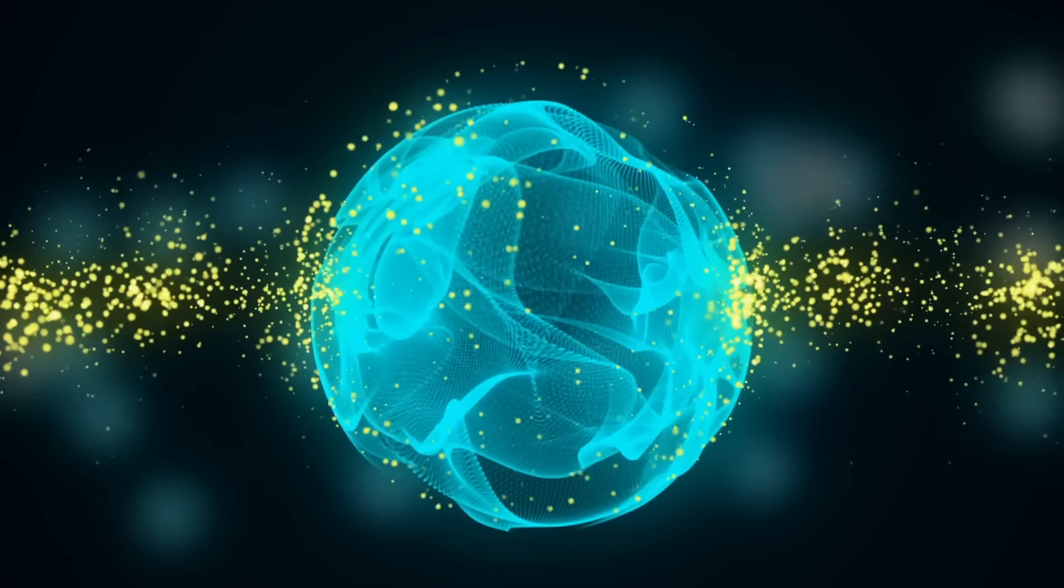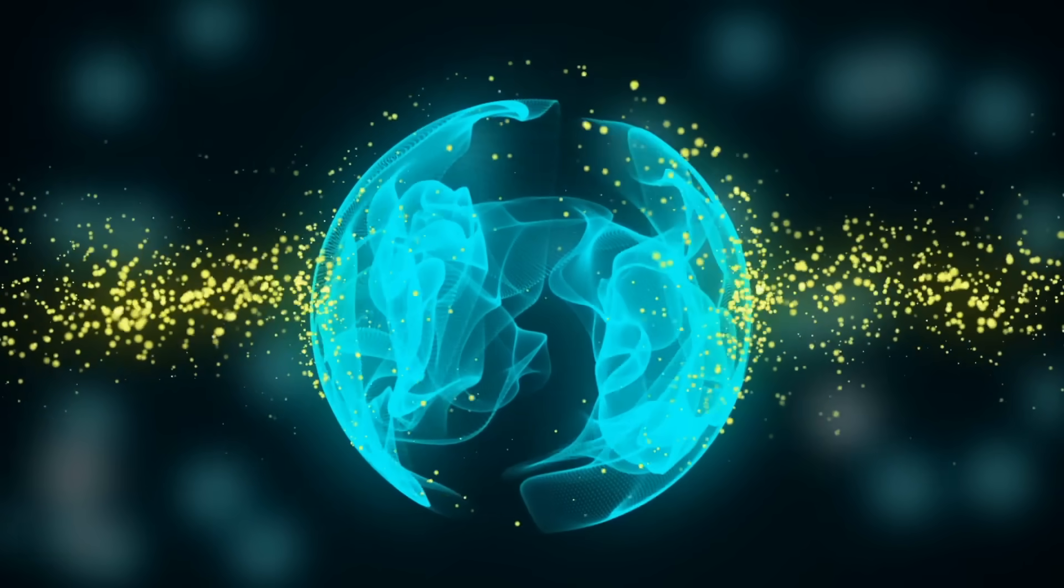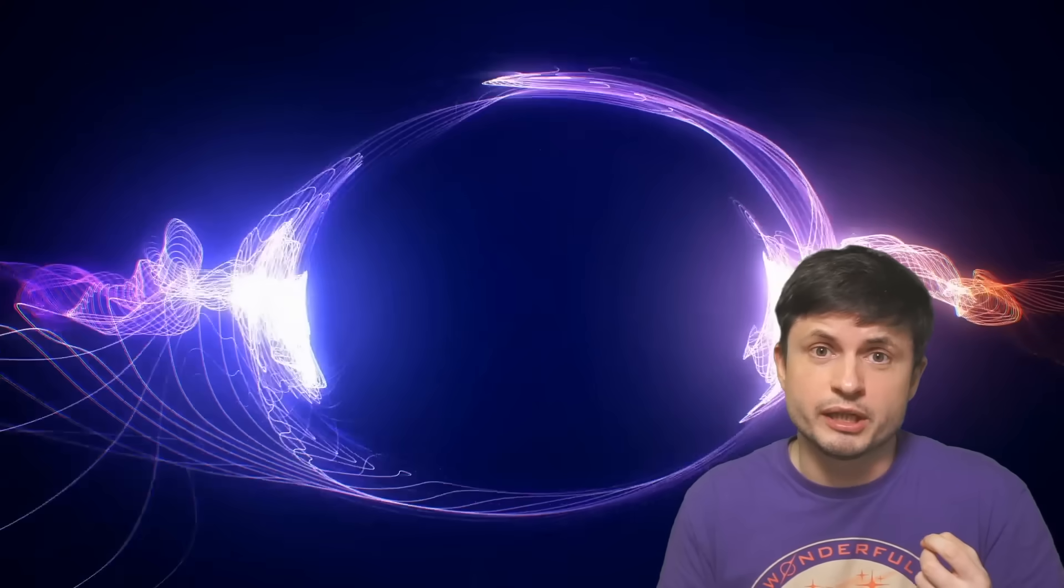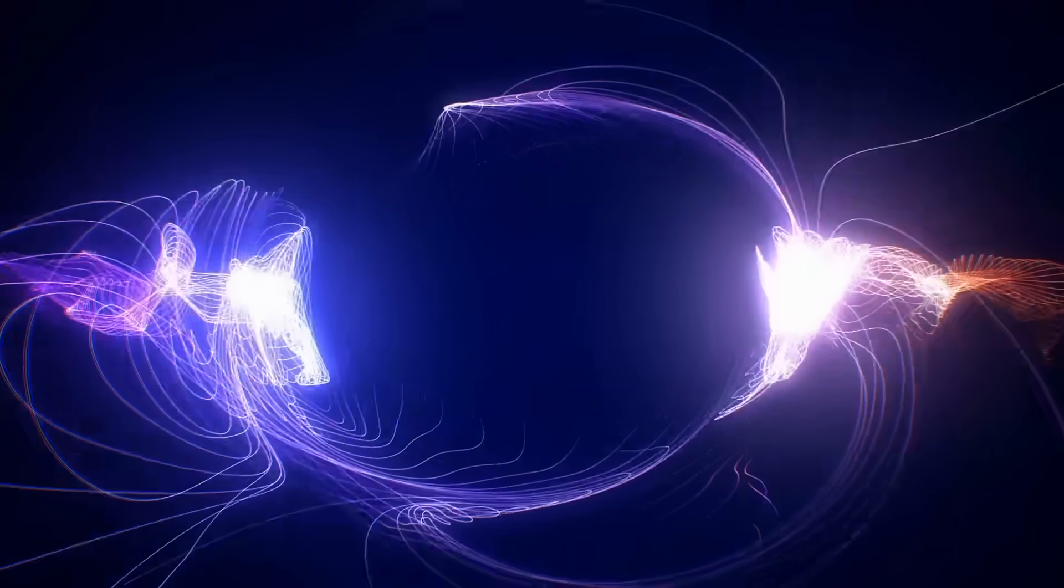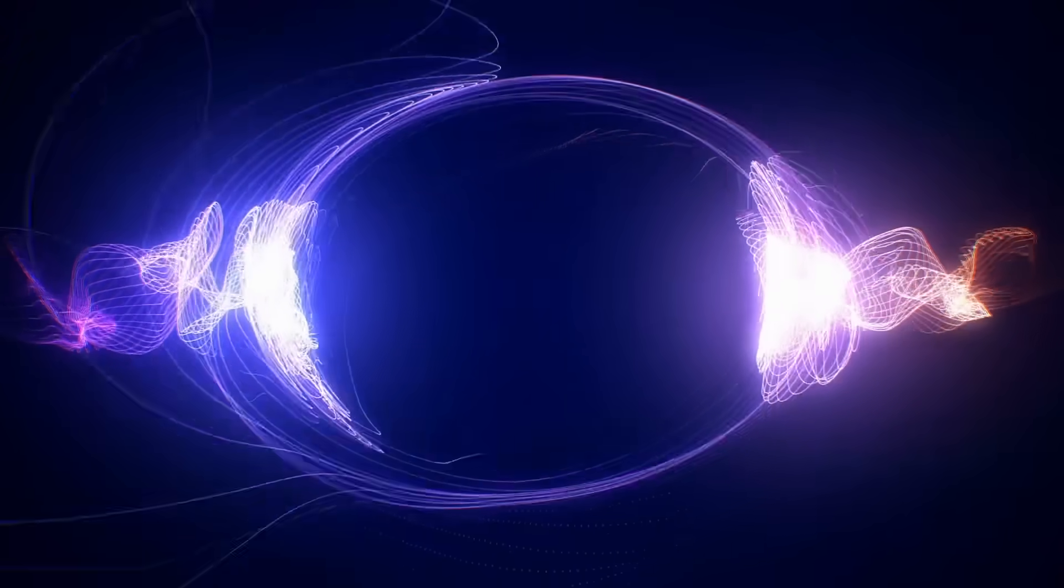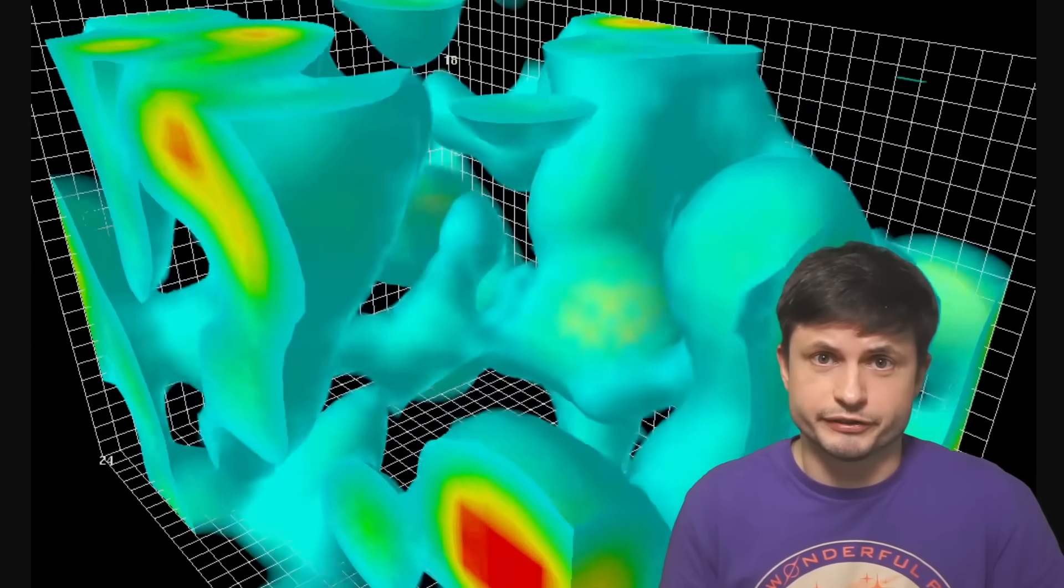It essentially involves either two particles or even sometimes a group of particles that become sort of connected to one another in such a way that their quantum state or their properties cannot be described individually anymore. Which means that by changing the property, any of the properties of one of these particles, you sort of automatically change the properties of all of the other particles connected to this initial particle. And this usually happens independent of how far away the particles are from one another. Or essentially to quote Einstein, spooky action at a distance.